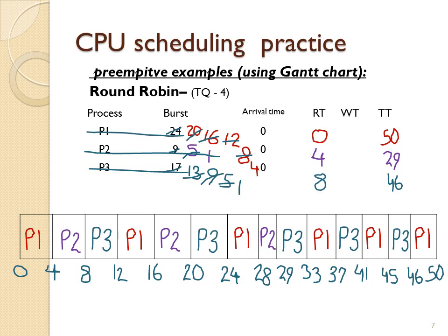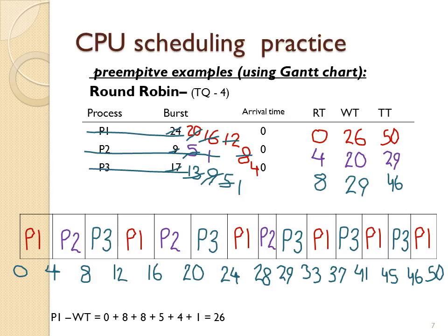To get the wait time, take the turnaround time and subtract the burst time. So P1's wait time is 26, P2's is 20, and P3's is 29. You can add these up and divide by 3 to get the averages. You could also add up each waiting interval individually — for example, P1 waited 0, then 8, then 8, then 5, then 4, then 1 time unit, which equals the same result. But the easier way is to take the total time and subtract the burst time, since P1 is only ever either waiting for the CPU or on the CPU.